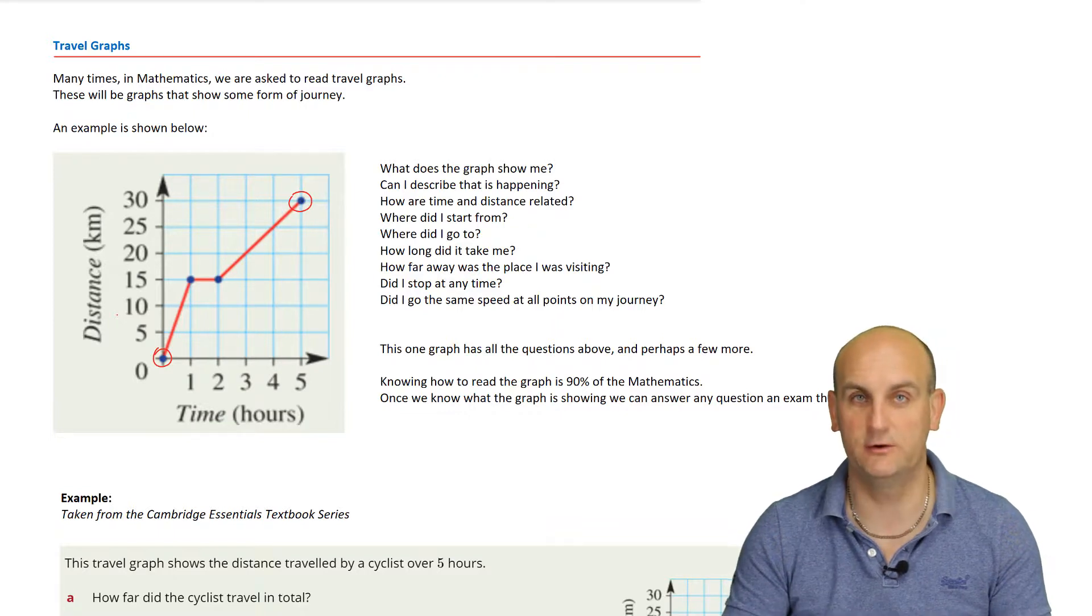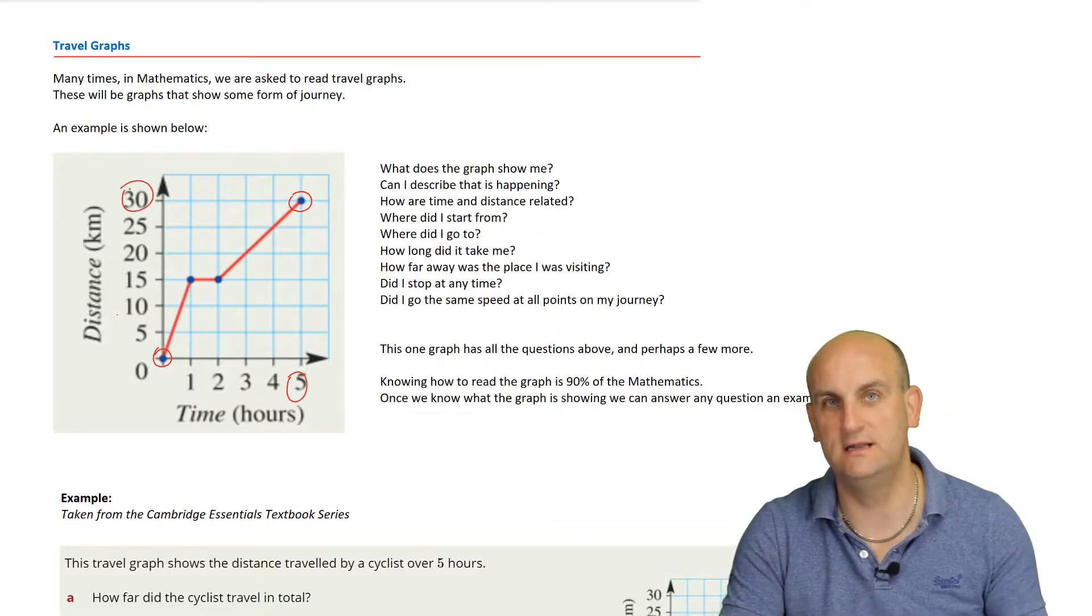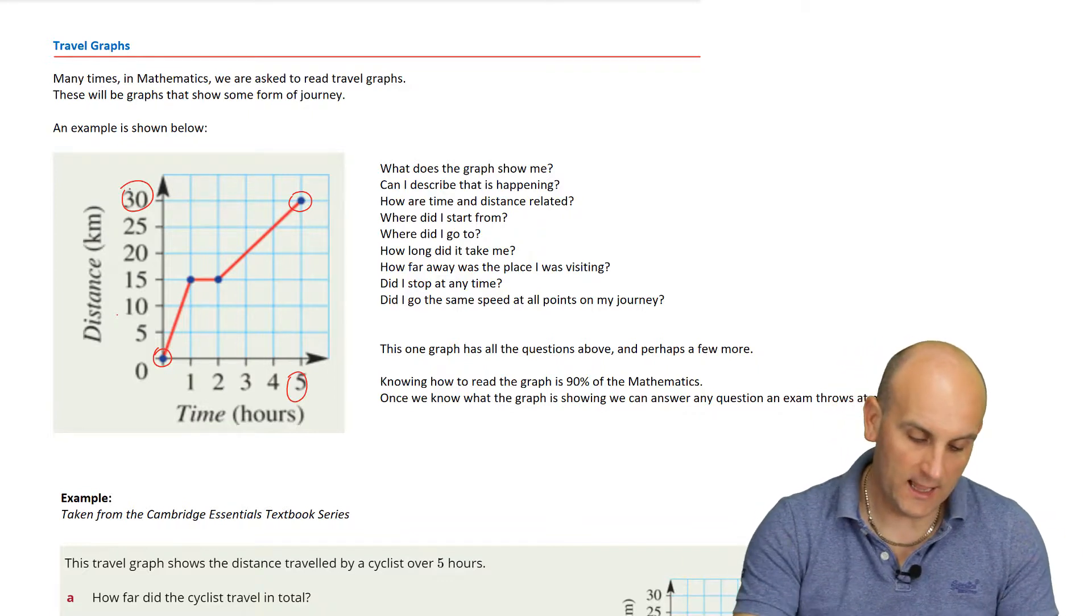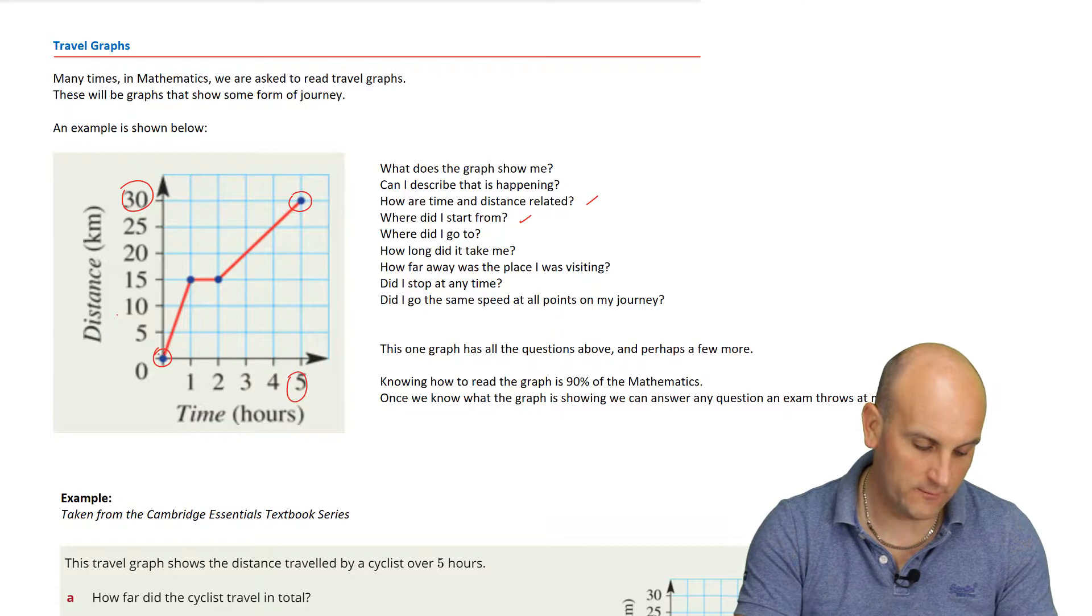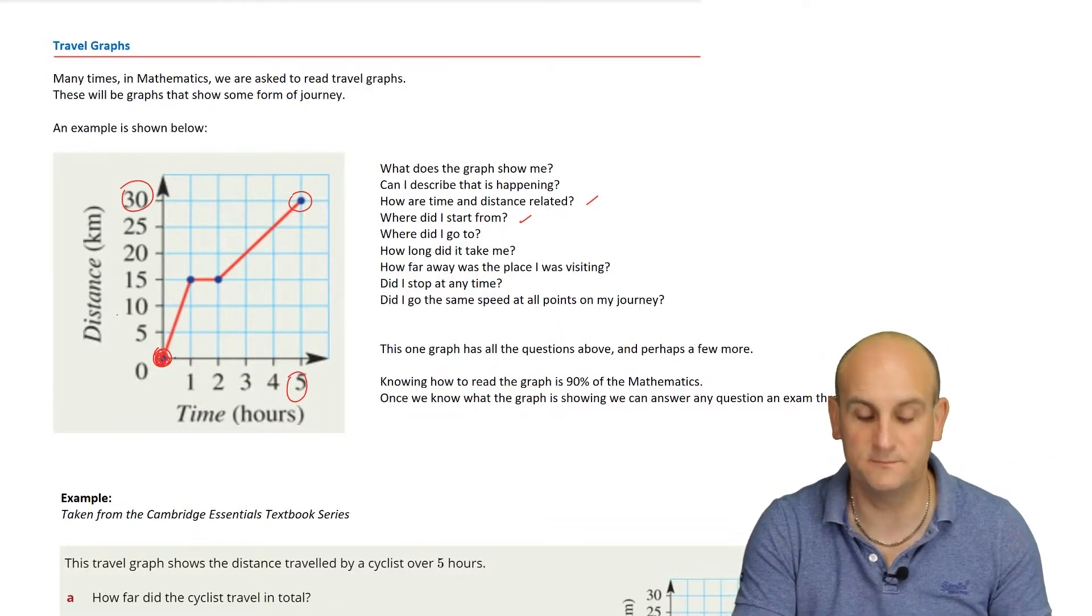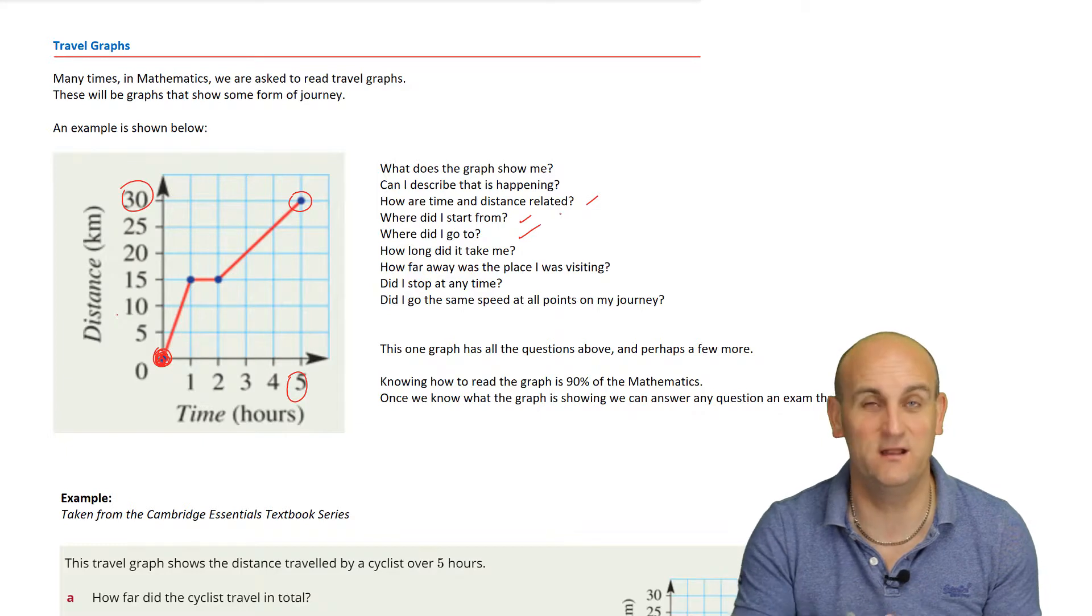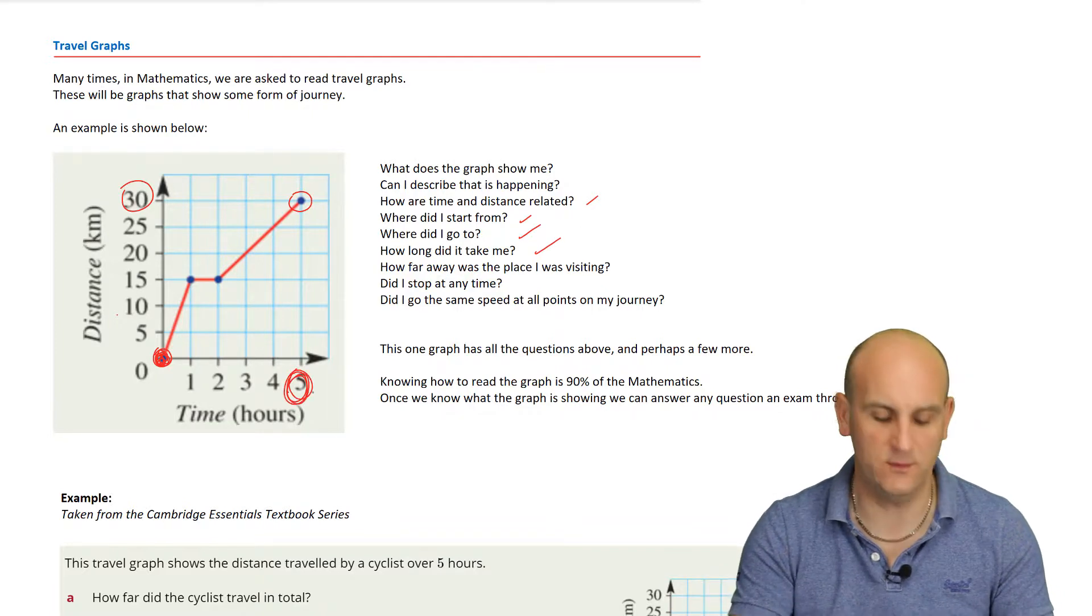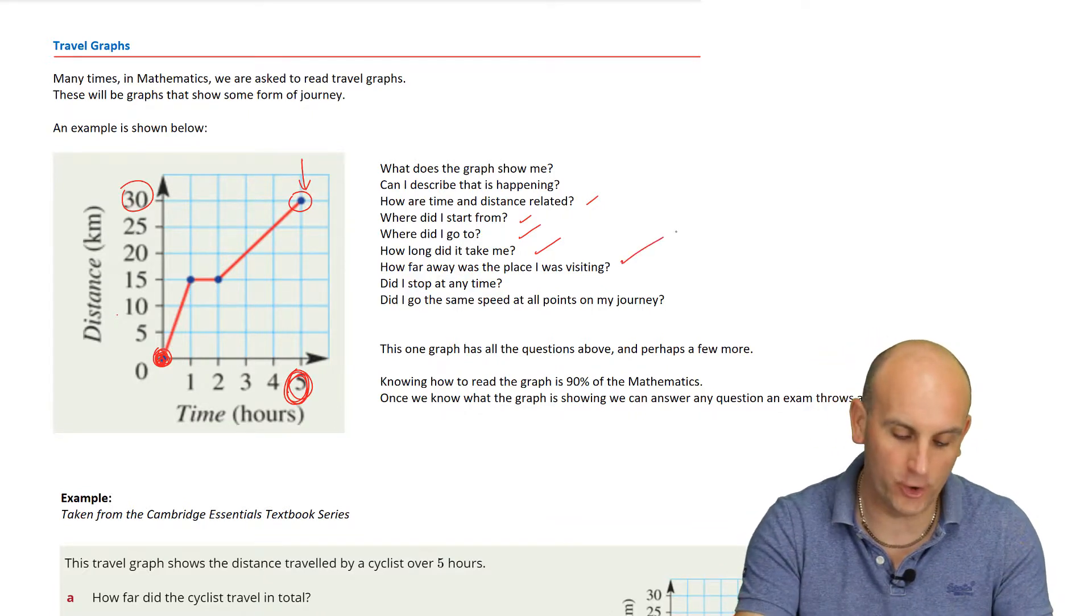Can I describe what is happening? Well, yes, I'm going on a journey. I'm starting. It seems to take me five hours. It seems to be that when I've got to where I need to go, it's 30 kilometers away. Well, automatically, I'm not going to be walking because I cannot walk 30 kilometers in five hours. I couldn't walk 30 kilometers ever. I'd collapse. How are time and distance related? Well, as time increases, so does my distance increase. Where did I start from? Well, actually, I started from here. But in my head, I can go, well, I started from home. Where did I go to? Well, somewhere that was 30 kilometers away. Maybe my grandmother's, maybe my friend. I don't know, maybe a party. Maybe I was going on holiday. How long did the journey take me? Well, we already know that. It's five hours because that's where the dot sits. How far away was it? 30 kilometers. Do you see what I mean?